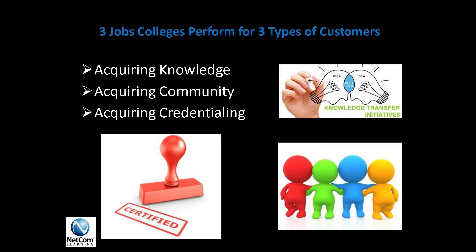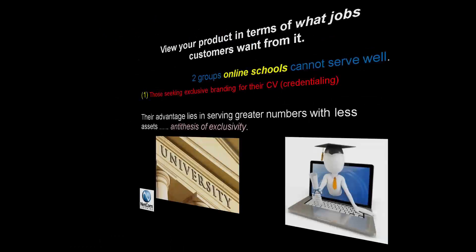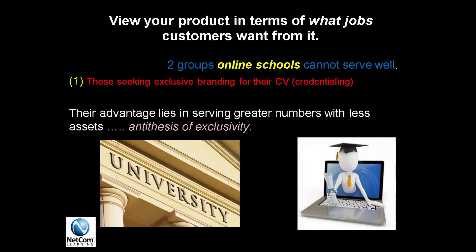Let's look at three jobs that colleges perform for three different types of customers: acquiring knowledge, community, and credentialing. If you have a JD and an MBA but are starting your own business and just need to understand accounting — you're not looking for credentialing or community. You just want knowledge. That is one job, and an online university could easily do that. But for acquiring community and credentialing, that might be a job that an online university might not do as well. So online education would be a partial disruption based on the business model.